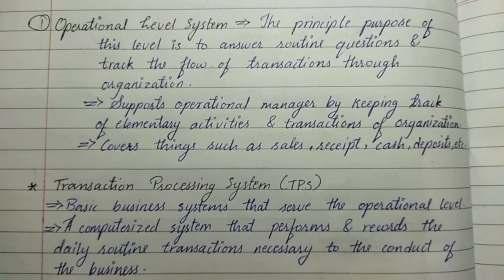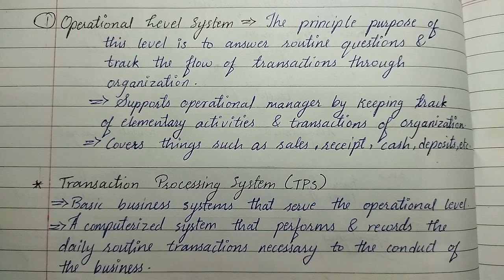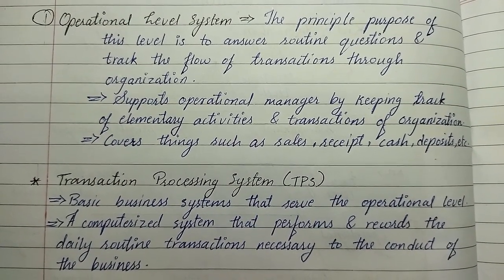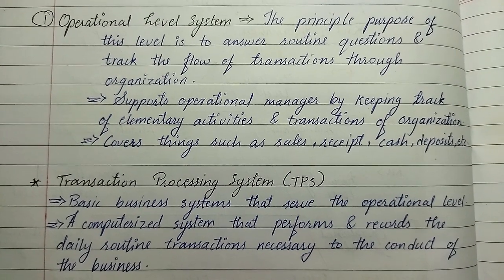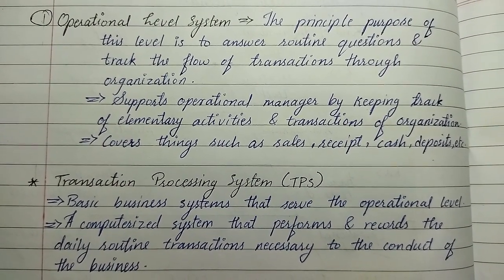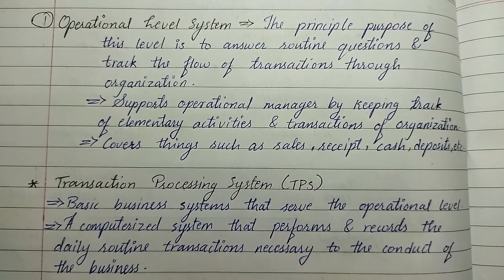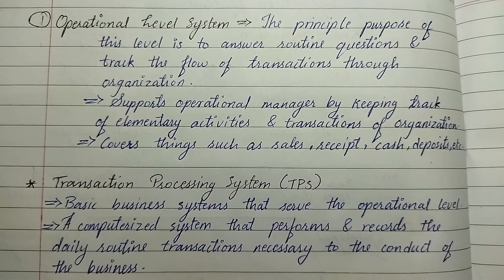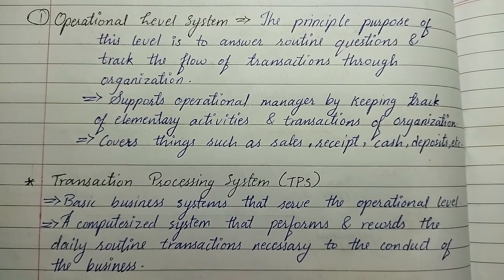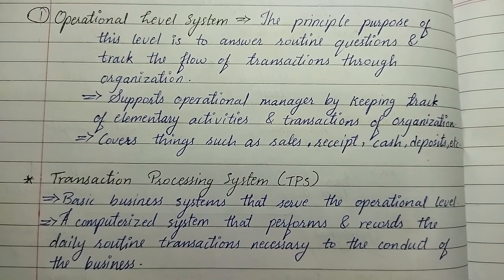The first kind of information system is the operational level system. Its principal purpose is to answer routine questions and track the flow of transactions through the organization. It supports operational managers by keeping track of elementary activities and transactions, covering things such as sales received, cash deposits, etc.